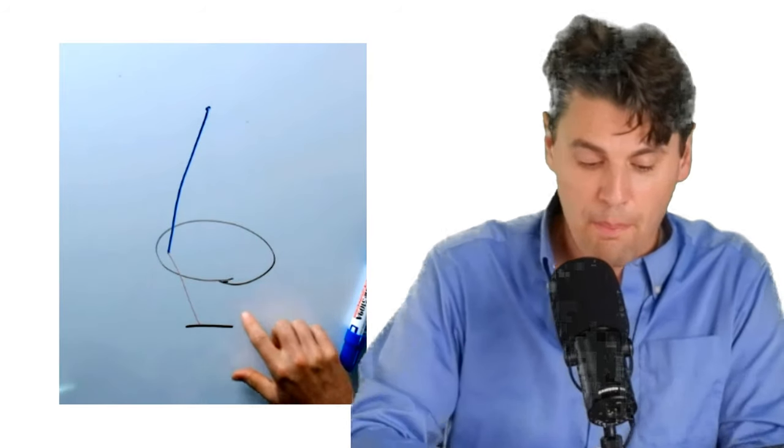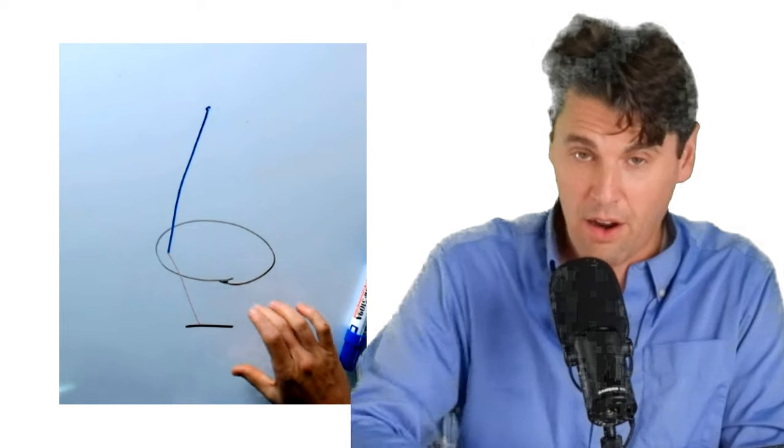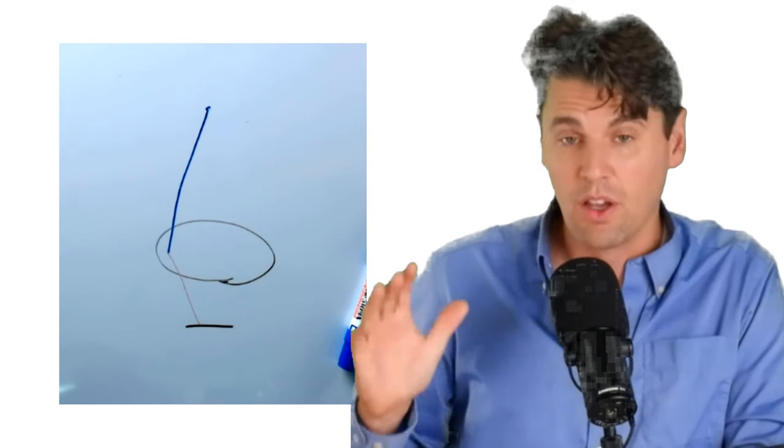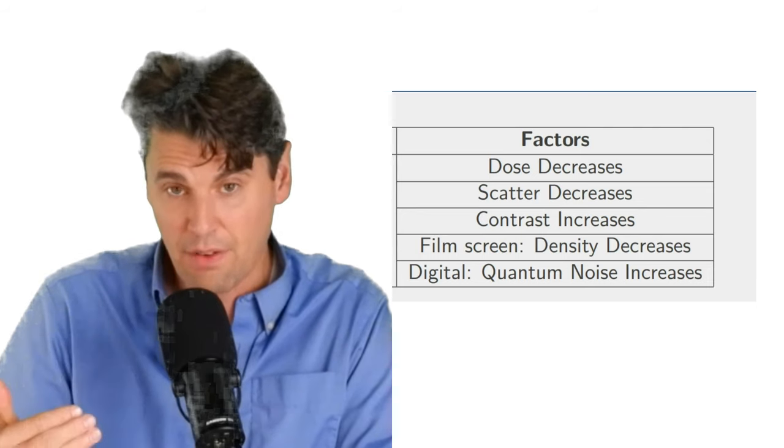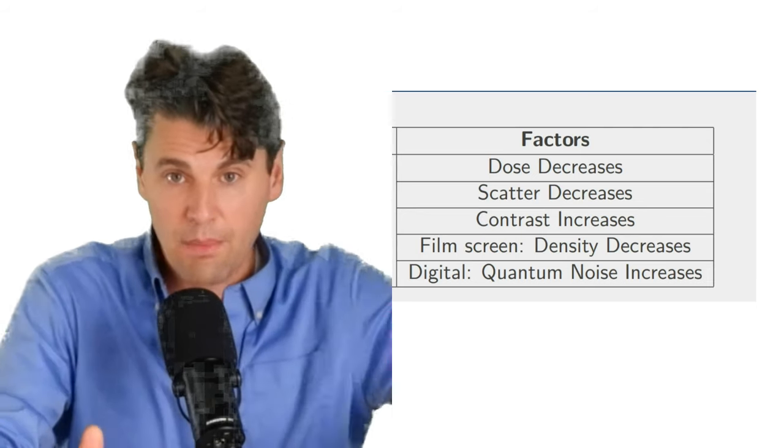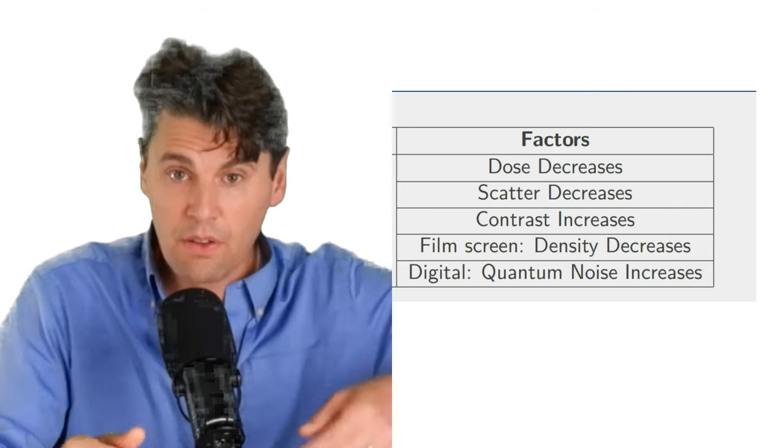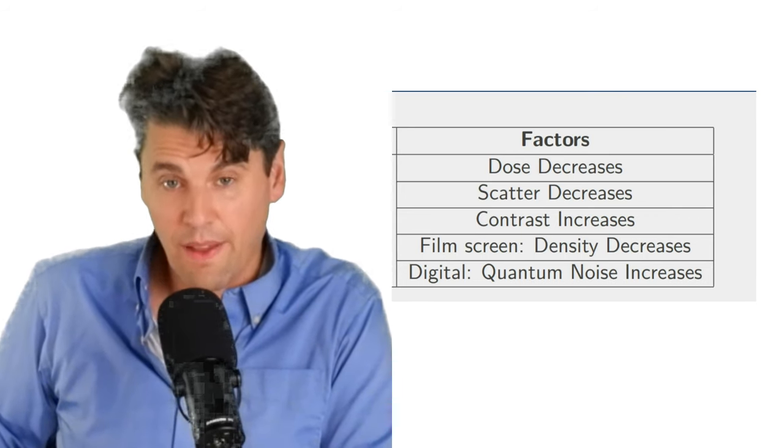When more of this area is irradiated, there's more areas to scatter, and hence there is going to be more background fog or background haze essentially in your image due to scatter. This also reduces the contrast in your x-ray images. So as you collimate down, reducing the field of view, that's actually going to increase your contrast.